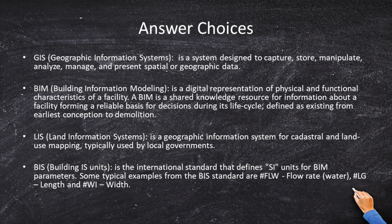GIS — Geographic Information Systems — is a system designed to capture, store, manipulate, analyze, manage, and present spatial or geographic data. That could possibly be a correct answer. BIM — Building Information Modeling — is a digital representation of the physical and functional characteristics of a facility. A BIM is a shared knowledge resource for information about a facility, forming a reliable basis for decisions during its life cycle, from earliest conception all the way to demolition. That sounds like a pretty legit definition.